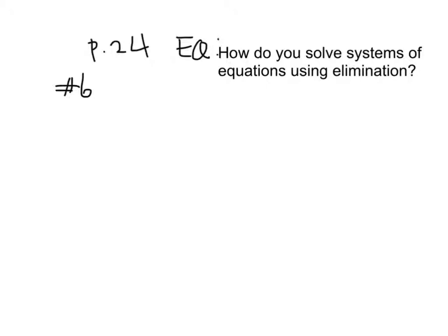We're on page 24. I wrote down your EQ for you: how do you solve systems of equations using elimination? And we're doing number 6. Let's go ahead and copy the question down here. So we have negative 4y plus 8x equals 16, and then we have 3y plus 21x, and that equals 15.